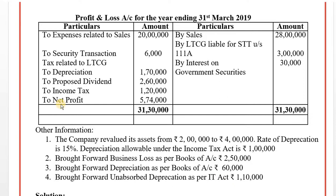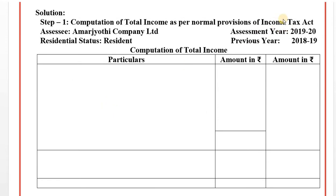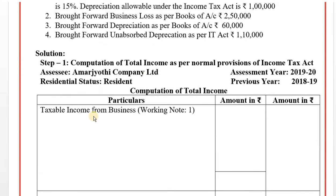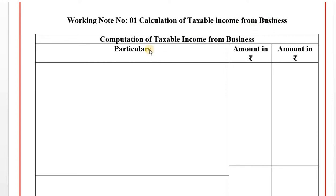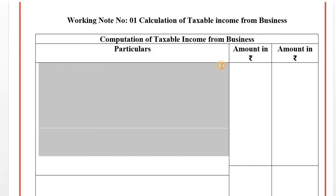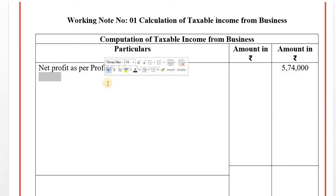Step 1: Computation of total income as per normal provisions of Income Tax Act for Amar Jyoti Company Limited — residential status: resident, assessment year 2019-20, previous year 2018-19. Working Note 1: Calculation of taxable income from business. Net profit as per profit and loss account is Rs. 5,74,000.